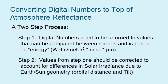Converting digital numbers to top of atmosphere reflectance is a two-step process. The first step is to take those scaled digital numbers and return them to values that represent energy — we're going to be talking about watts per meter. In step two, you take the new energy-related values from step one and account for differences in solar irradiance due to the geometry of the Earth.